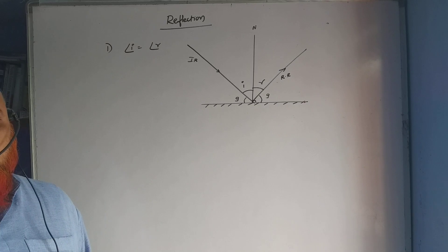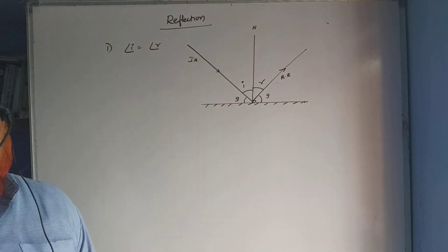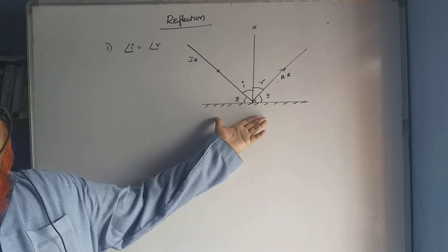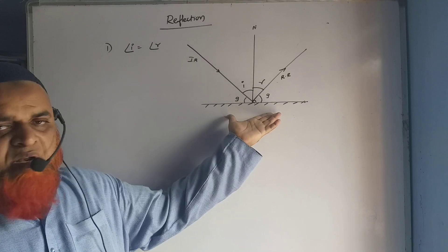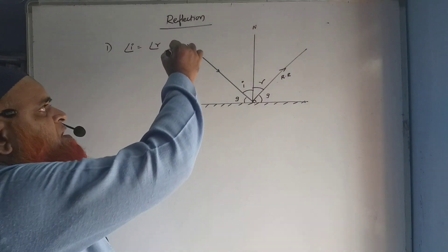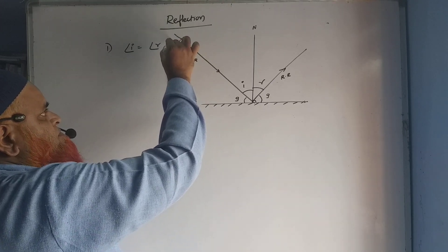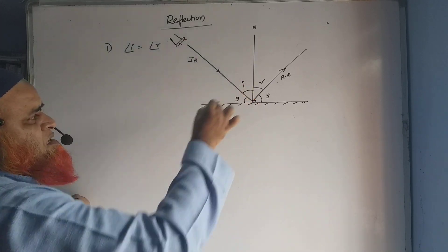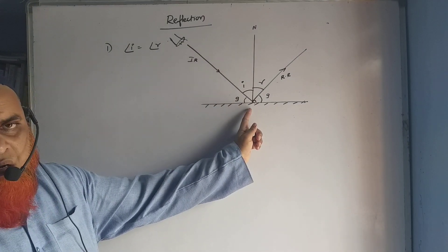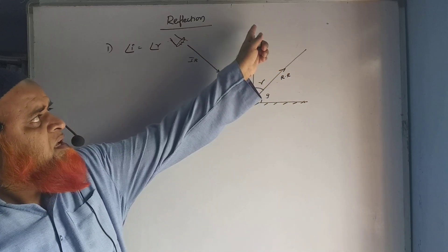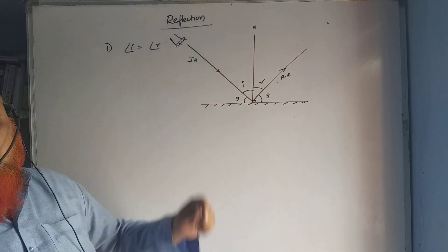Today we are going to discuss reflection. In this process, the first thing we need is a mirror. Consider a torch from which a light ray comes, falls on the mirror, and gets reflected back. There is an imaginary line drawn at that point called the normal.